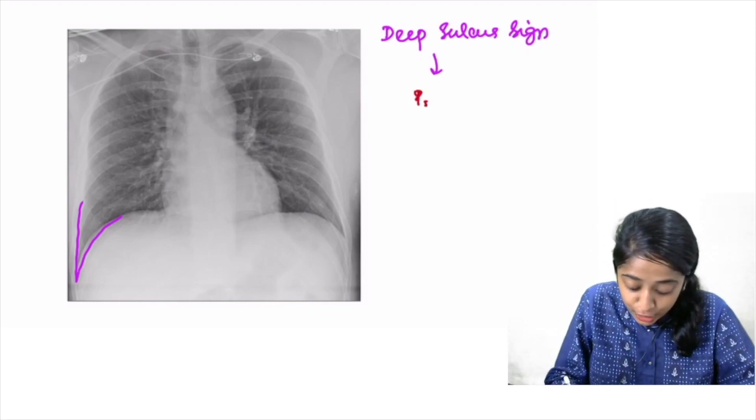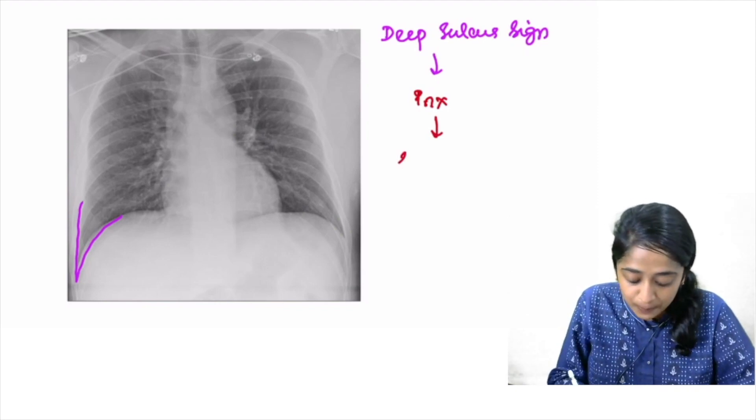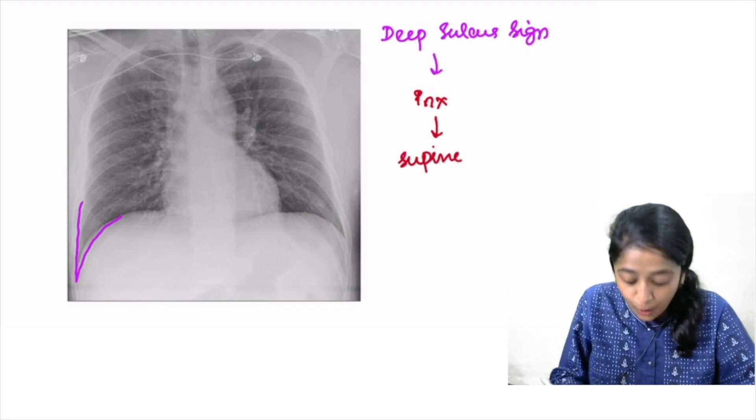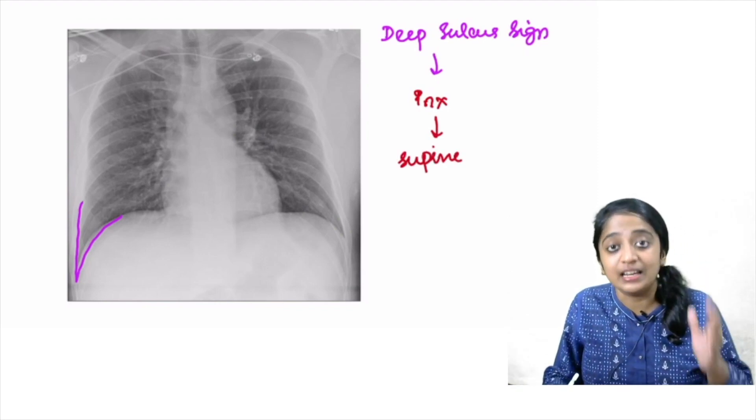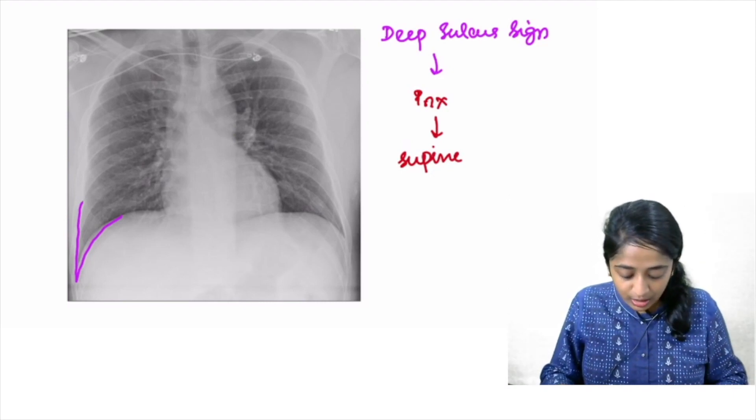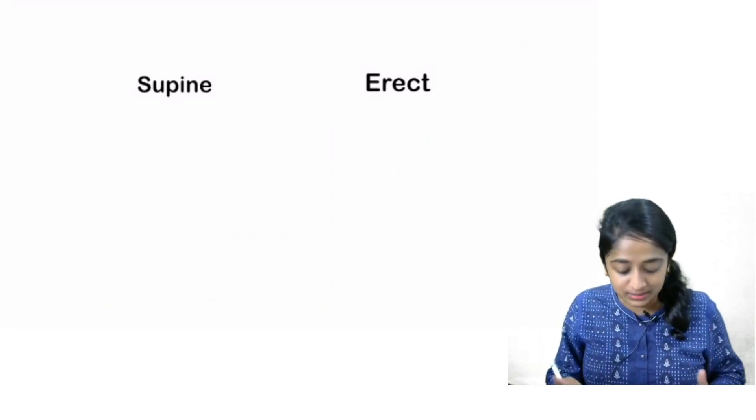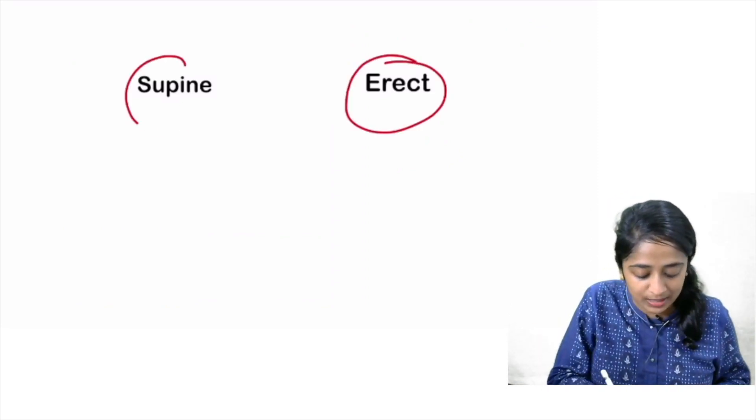It is seen in cases of pneumothorax and more importantly, which view? In supine radiographs of chest, you are going to get deep sulcus sign as the evidence of pneumothorax. So now let's see what are the views available to diagnose pneumothorax.